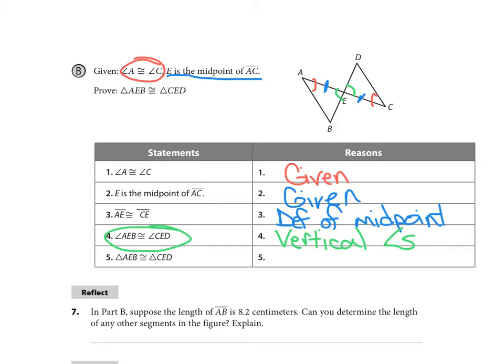And now I know that those triangles are congruent because of angle, side, angle.